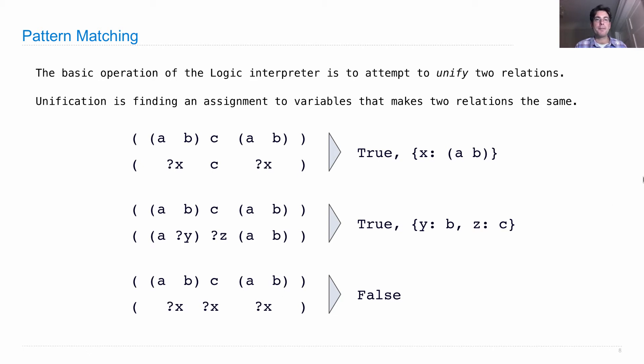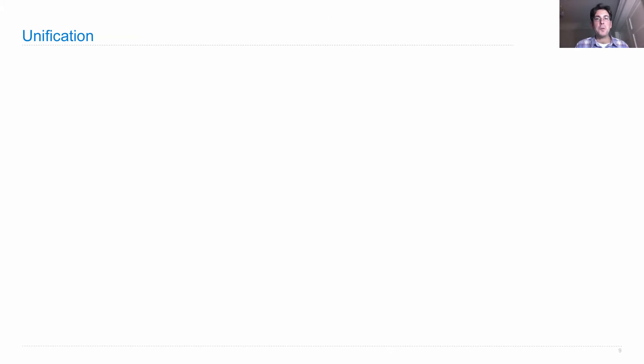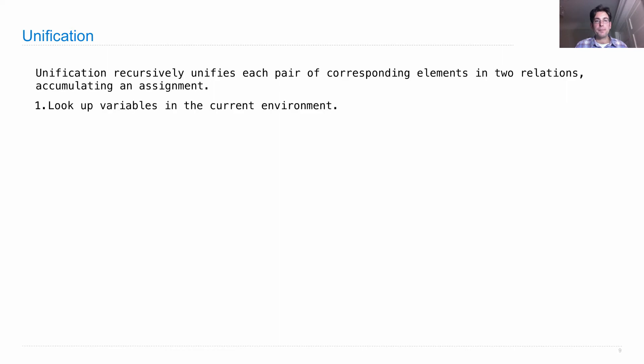So that's the goal of unification. Let's talk about how it works. It's actually a pretty simple process. Unification recursively unifies each pair of corresponding elements in two relations, and as it goes it accumulates an assignment from the variables to their values. This is really two stages. You look up the variables in the current environment to tell you if you've established any bindings already. This is important because you can only have one particular binding for a variable. So if you see x appear twice, it's got to mean the same thing in both cases. Then we establish new bindings to unify the elements.